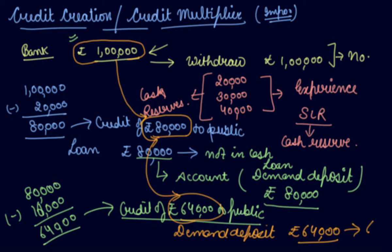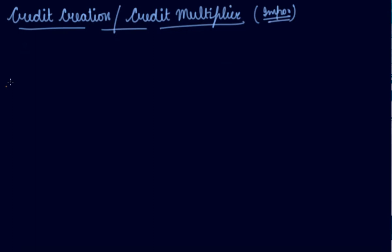Commercial banks know by way of historical experience that all depositors would not rush to the bank to withdraw all deposits at the same time. So they keep a certain amount of cash as a reserve — the Statutory Liquidity Ratio. If experience shows that withdrawals generally amount to 10% of deposits, the bank needs to keep only 10% as cash reserves.